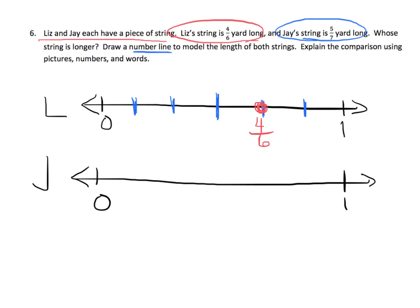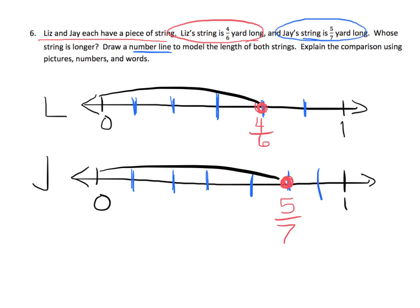Now we're going to do the same for Jay: five-sevenths. We have to cut this into seven equal parts — one, two, three, four, five, six, seven, pretty close. This is zero-sevenths and this is seven-sevenths, so going backwards that's six-sevenths, and back again that's five-sevenths right here. That tells us that Jay's piece of string is a little bit longer than Liz's, because five-sevenths is further down the line than four-sixths.